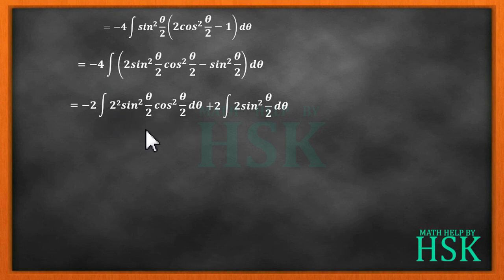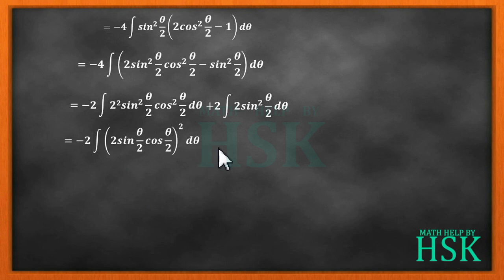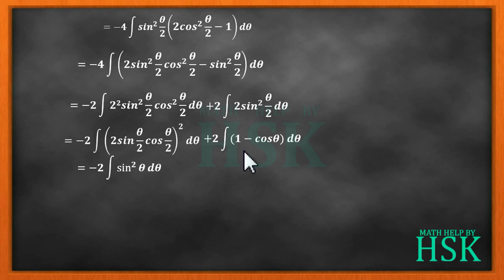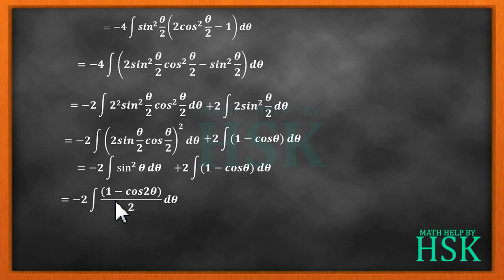So all three terms can be written as minus 2 times integration of (2 sin(θ/2) cos(θ/2))² dθ, and the remaining term 2 sin²(θ/2) can be written as (1 minus cos θ) dθ. Now we know that 2 sin(θ/2) cos(θ/2) equals sin θ, so I can write this as equal to minus 2 times integration of sin²θ dθ.